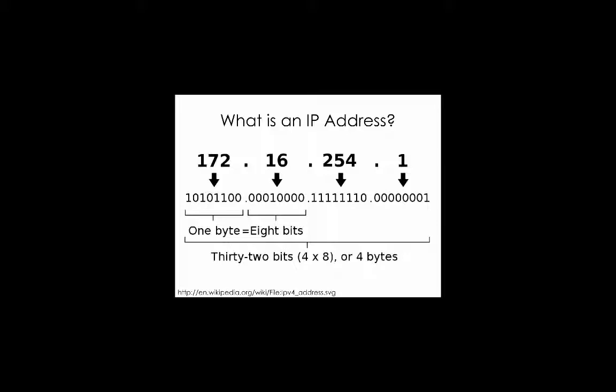The problem we have is we're actually running out of addresses. So you'll see a more complicated version called IPv6, which has a lot more capacity. But for now, an IP address is still the standard way that you connect to another computer on the internet.